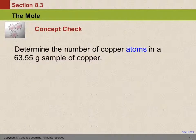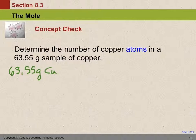Let's do another one. Determine the number of copper atoms in a 63.55 gram sample of copper. So we've got 63.55 grams of copper. And we want to find the number of atoms. Well, there's a number on the periodic table here. This tells us the mass in grams of one mole, right?